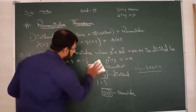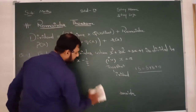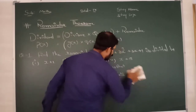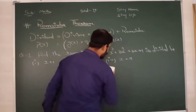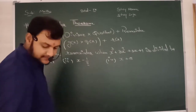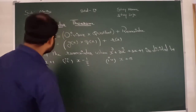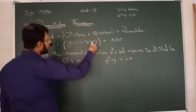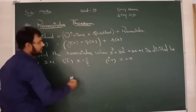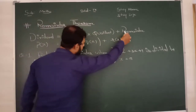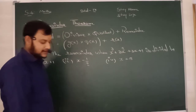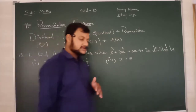Dear students, for each and every term we have a symbol. For dividend we have the symbol p(x), for quotient we have the symbol q(x), for divisor we have the symbol g(x), and for the remainder we have the symbol r(x).